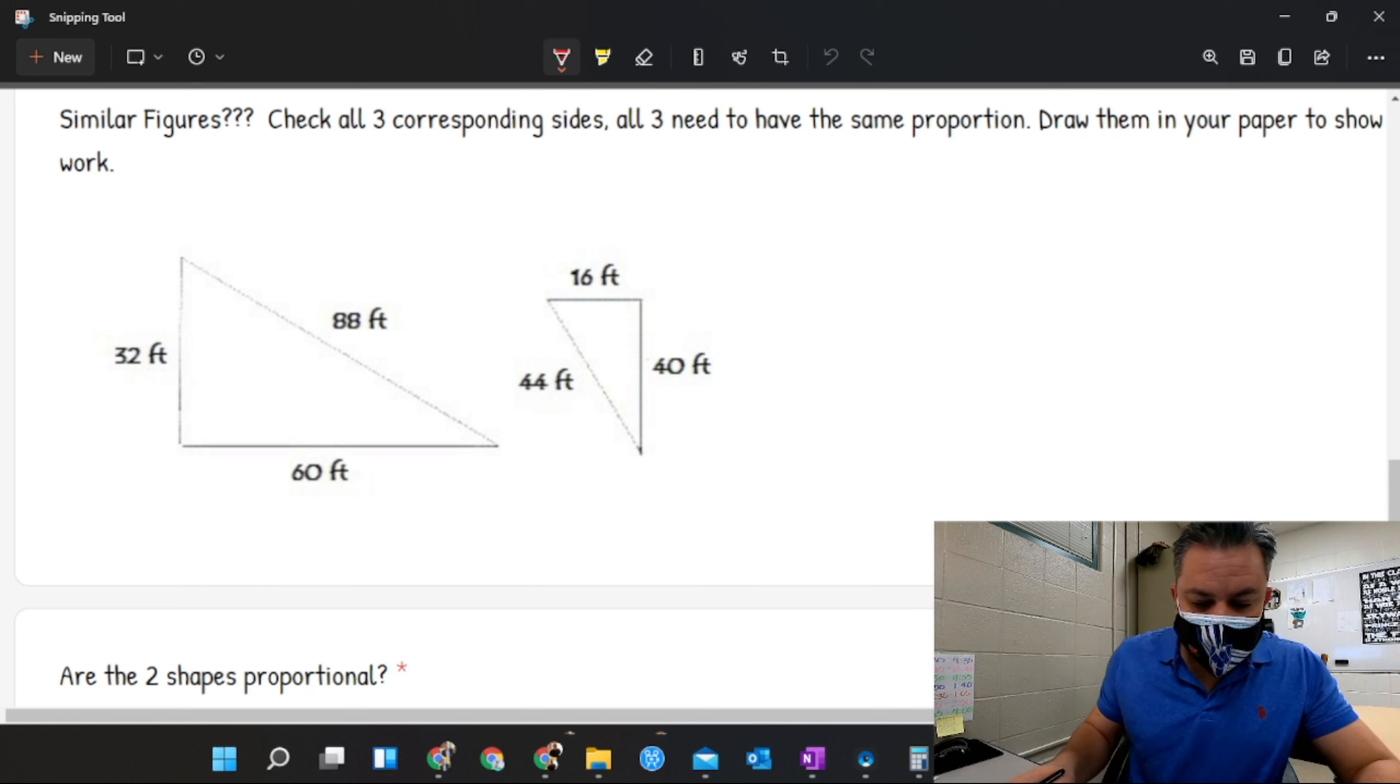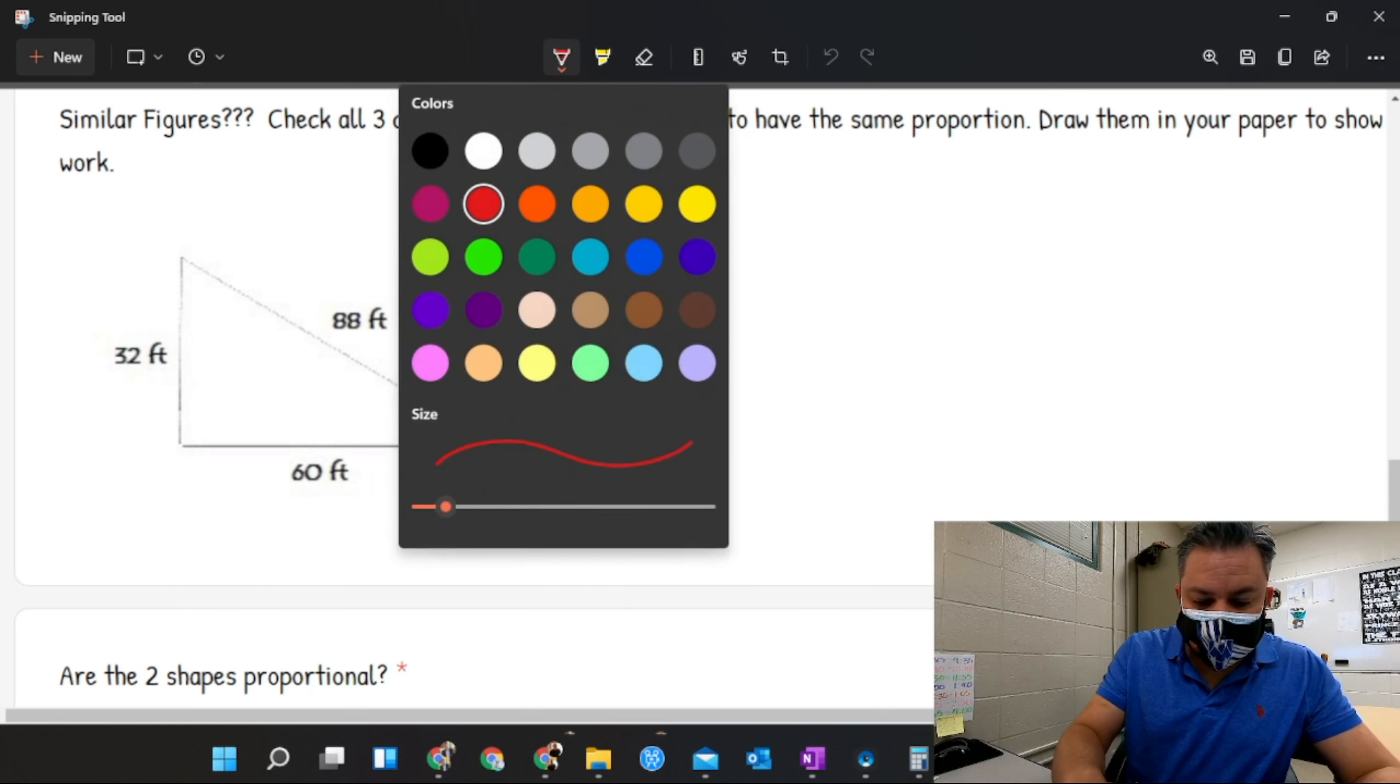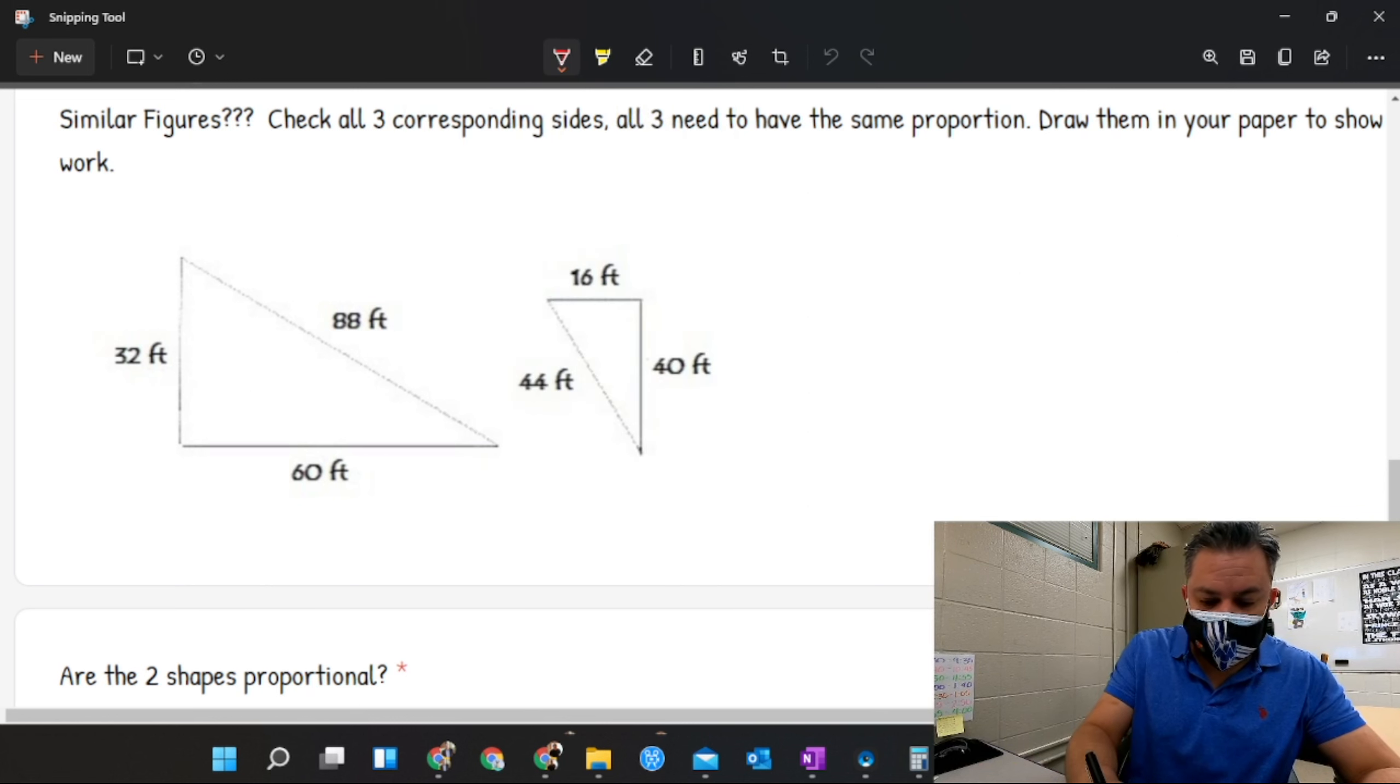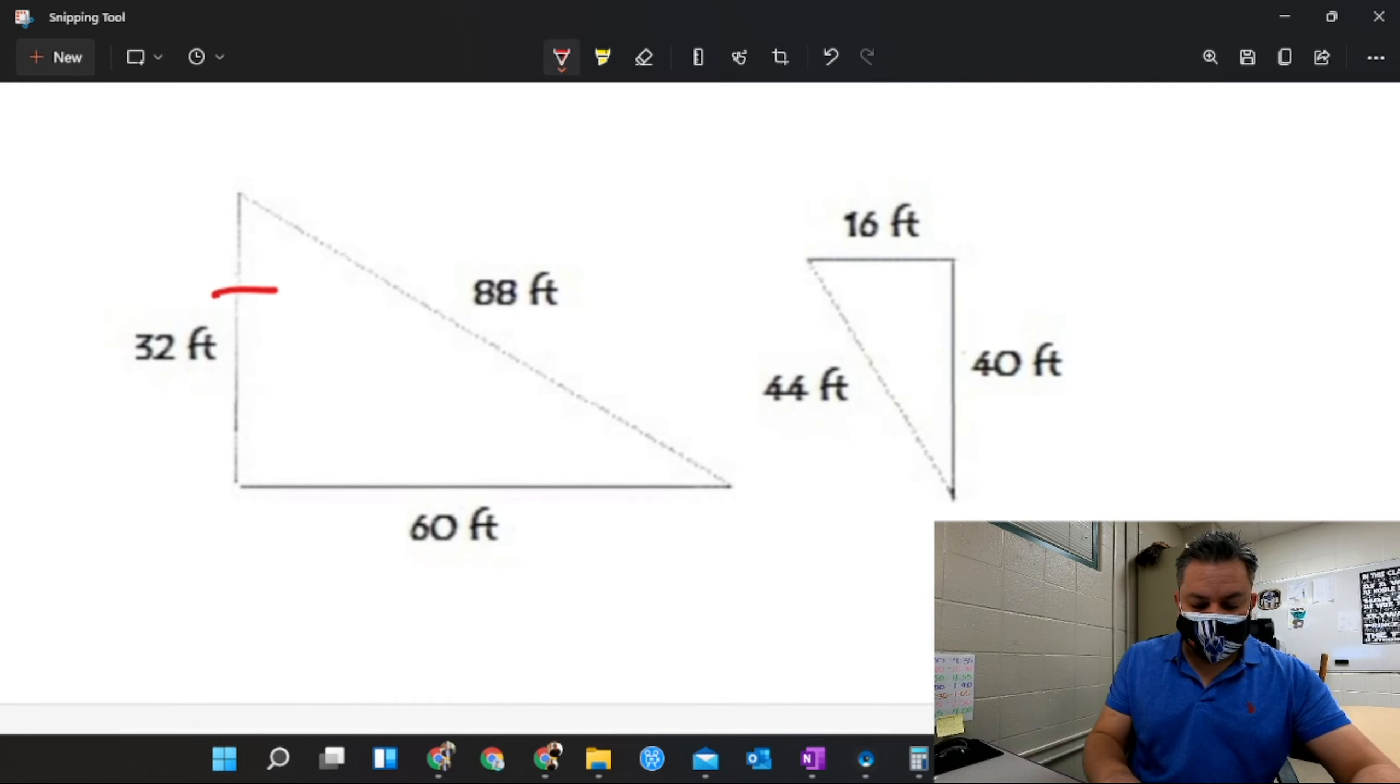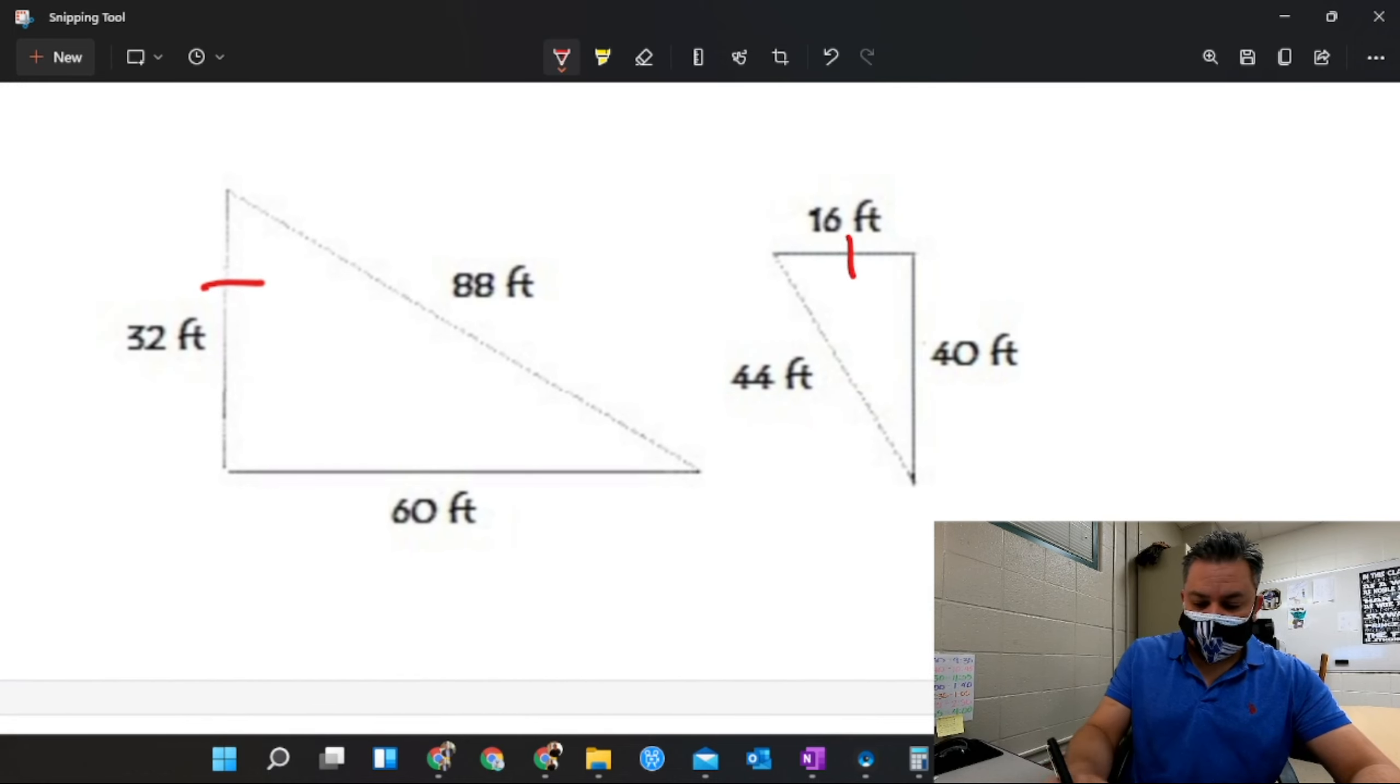For example, I'm gonna get the shortest side right here and I'm gonna find the shortest side on the other one. Which one is my shortest side on the other triangle? 16. So I put in one tick mark.